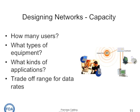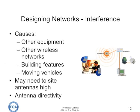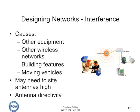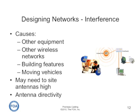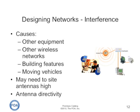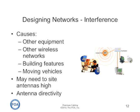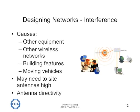You have to trade off range for data rates. Wireless networks can be disrupted by interference. The interference can come from other types of equipment, other wireless networks, reflections off various building features, or moving vehicles. It may require that you site the antennas high or make them directive.